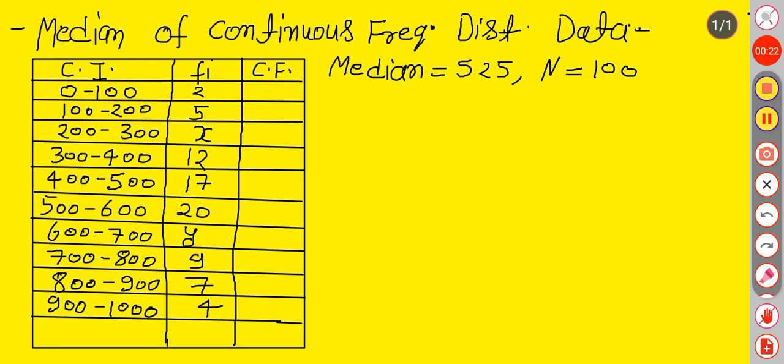you will not find median. However, you are going to find frequencies x and y. Median is already given and total number of observations are given, that means n equals 100. Now we need to find these two frequencies.